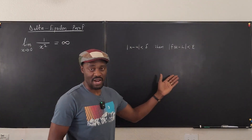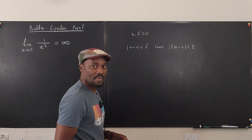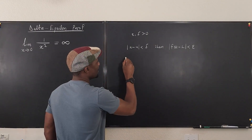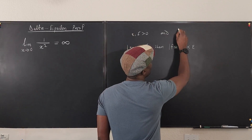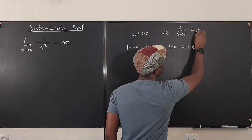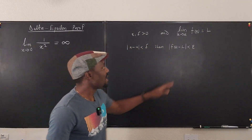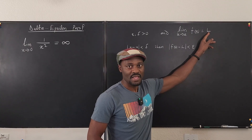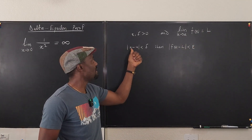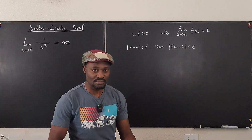This is typically what we write for epsilon and delta greater than zero. We say this is the case if we have the claim that the limit as x approaches a of f of x is equal to L. This is what we usually state: that if the limit of this function is L, then we can say that if the absolute value of x minus a is less than delta, then f of x minus L is less than epsilon.